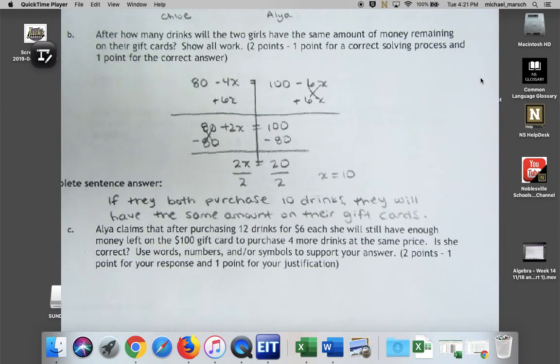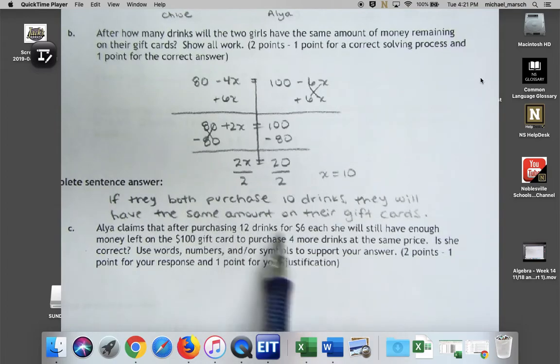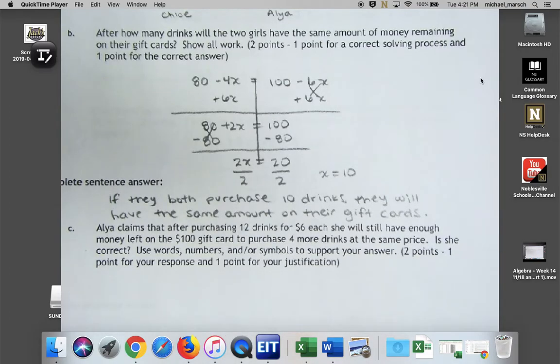Alia claims that after purchasing twelve drinks for $6 each, she will still have enough money left on the $100 gift card to purchase four more drinks at the same price. Is she correct? All right, so let's think about this. How many total drinks is she hoping to purchase? Twelve plus four is sixteen, right?